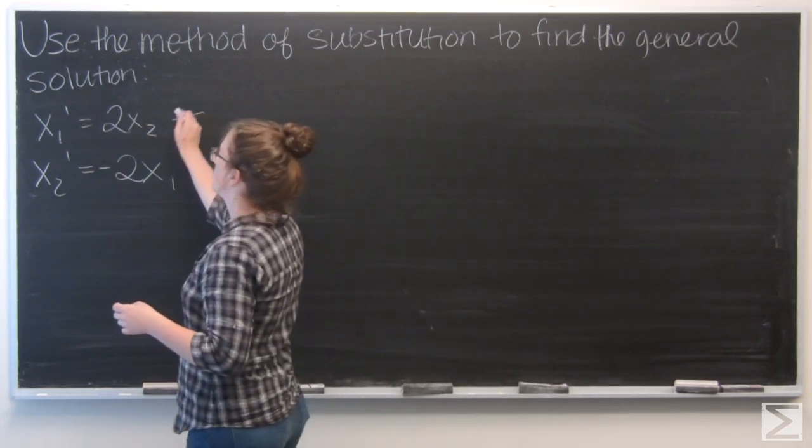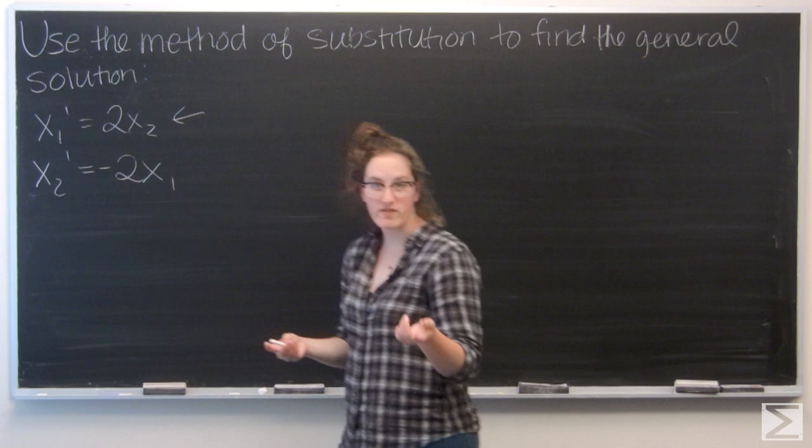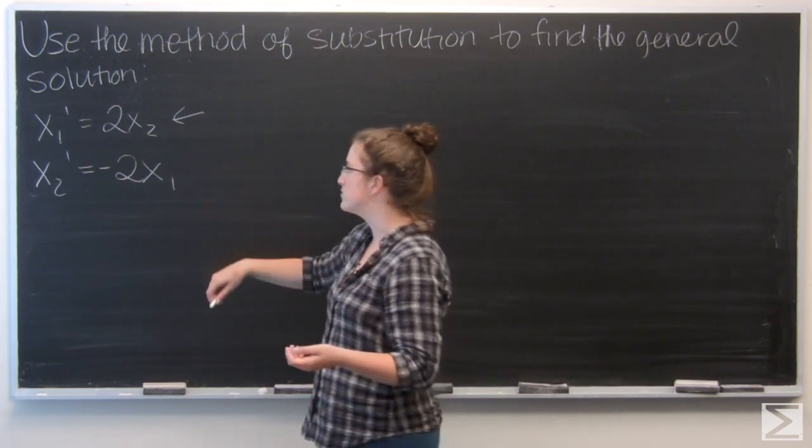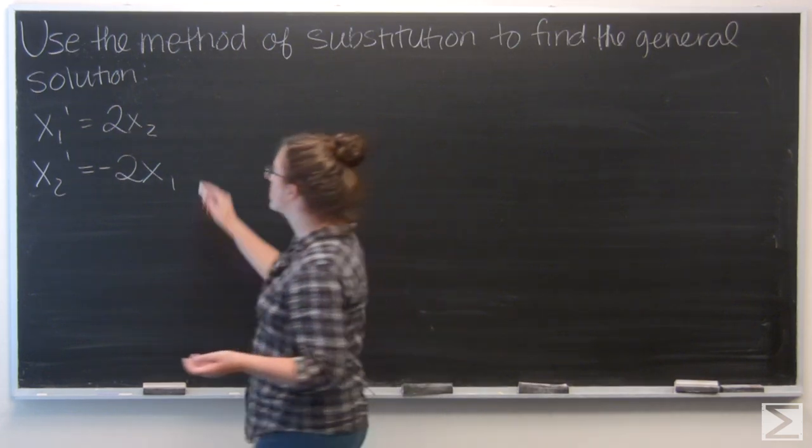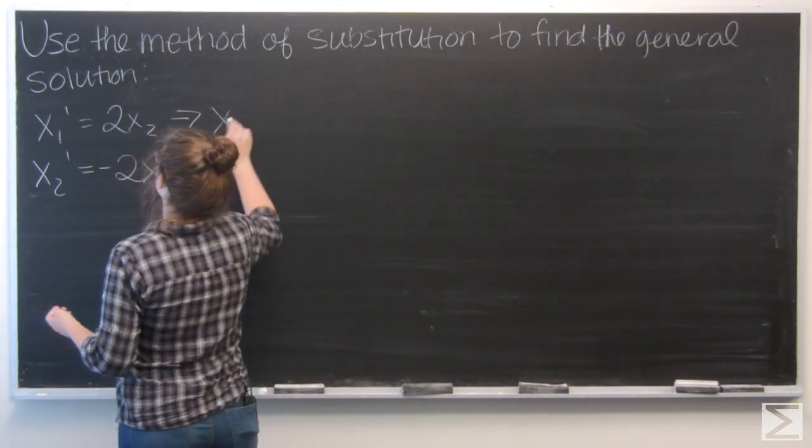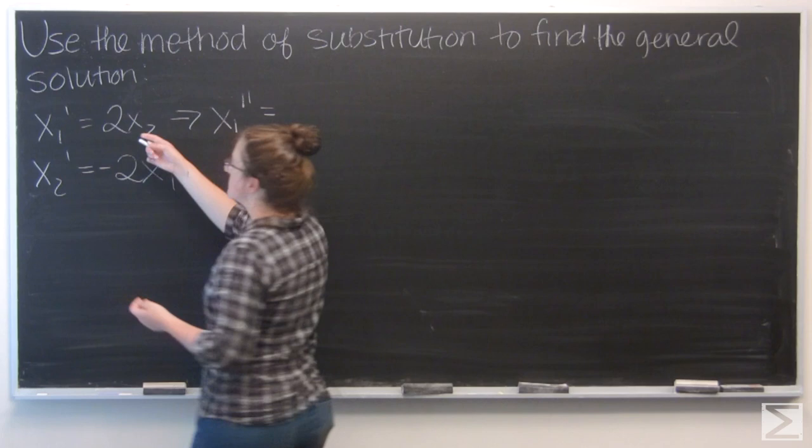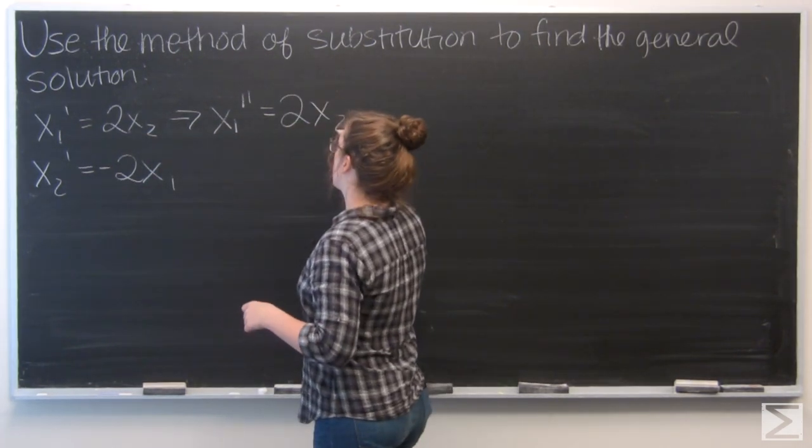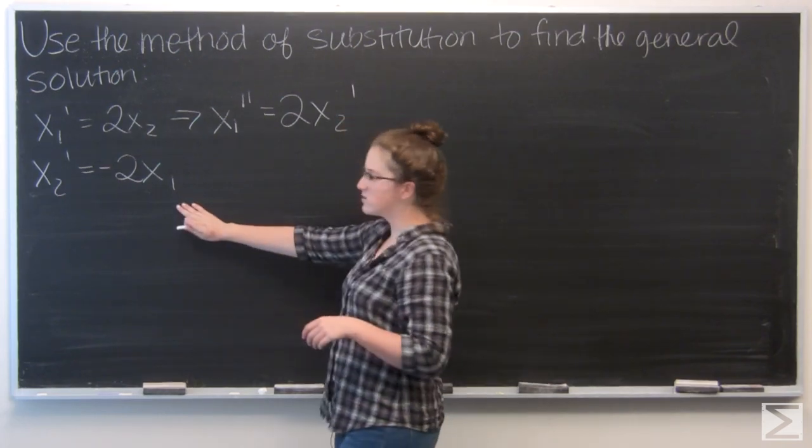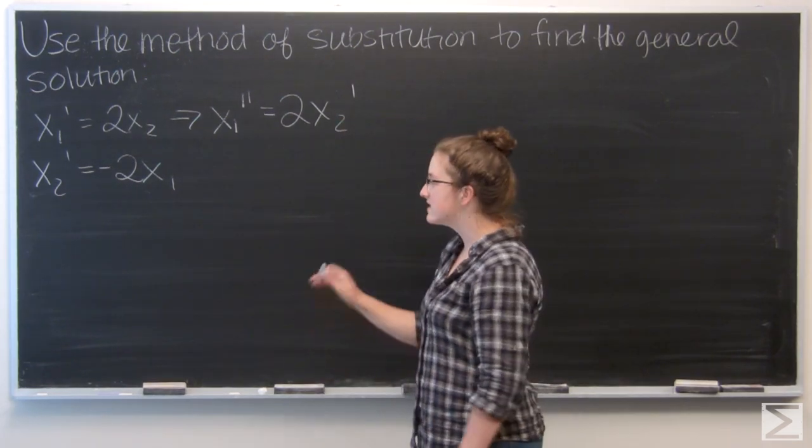I'm going to use the first equation, take the first derivative of it, and then plug in for x2 prime. So let's go ahead and do that. I get x1 double prime equals 2x2 prime. And then I know from the second equation that x2 prime equals negative 2x1.